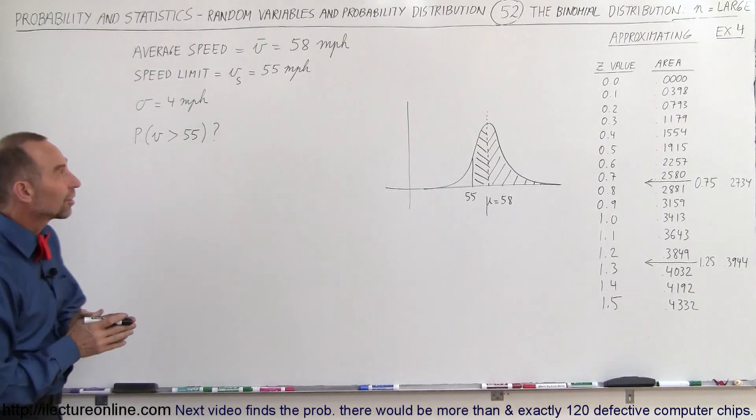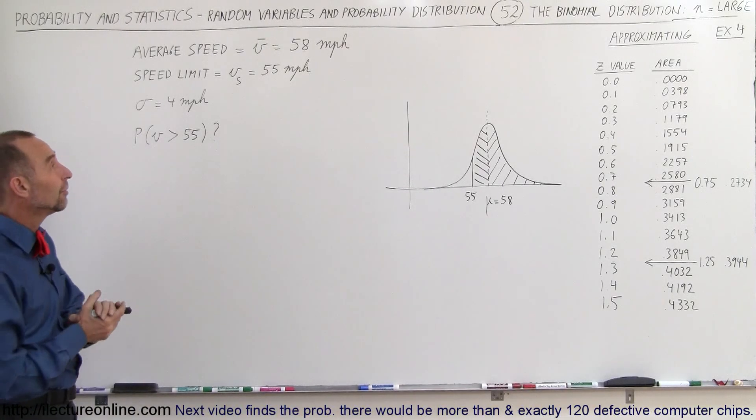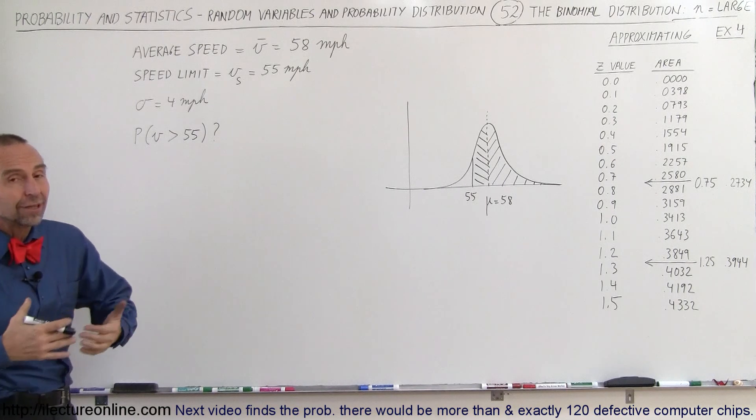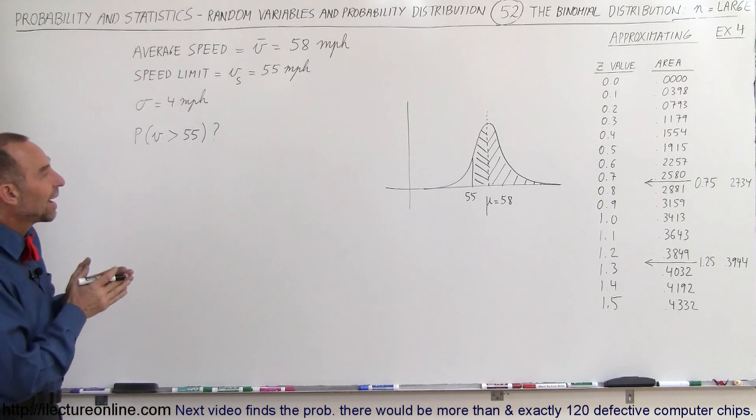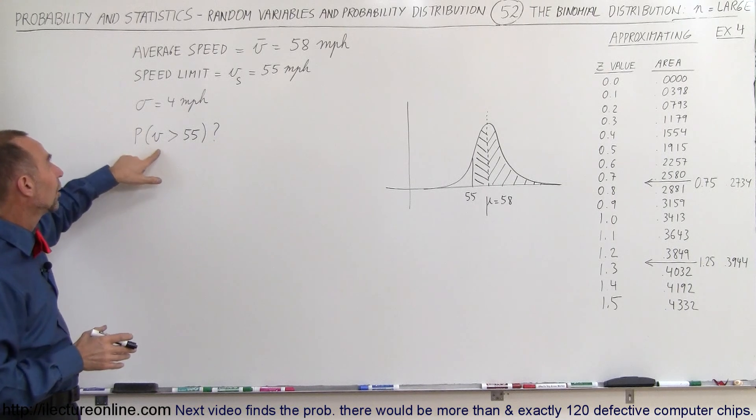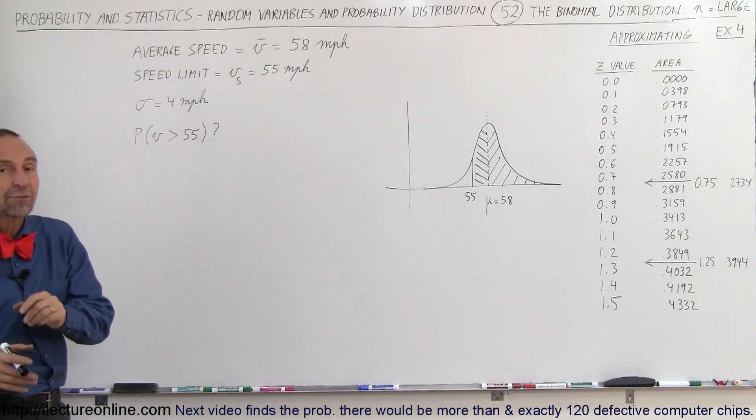Welcome to our lecture online. Here's a practical example of how to use the binomial distribution approximation method to find the probability that cars are driving faster than 55 miles per hour.